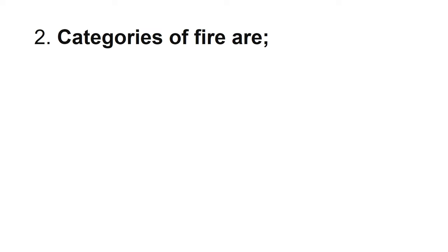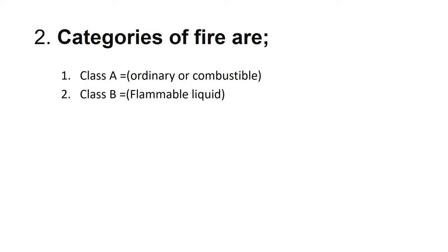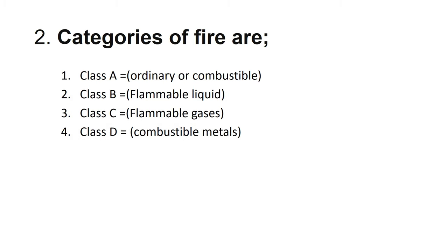Categories of fire — how many types of fire are there? Class A fire: ordinary combustible fire, fire on papers, wood, cloth. Class B fire: flammable liquids — petrol, diesel, and other types of liquid. Class C fire: flammable gases. Class D fire: combustible metals. Class E fire: electric fire. There are five categories of fire — Class A, B, C, D, and E.